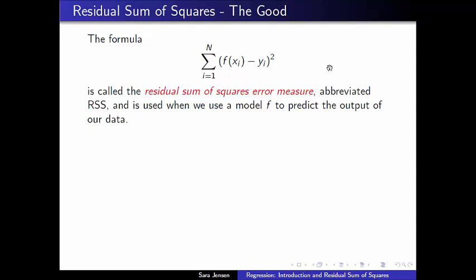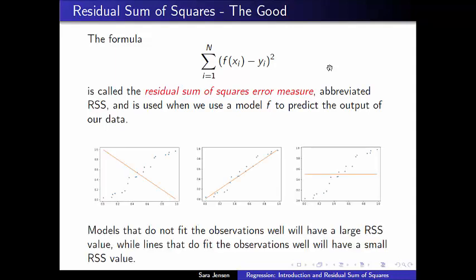This formula, the residual sum of squares error measure, is what we are going to use to measure the accuracy of a model. Now we've discussed how data points that are close to the line will have a small difference between the actual outcome and the predicted outcome on an individual scale.